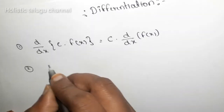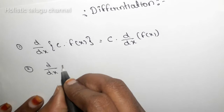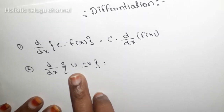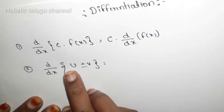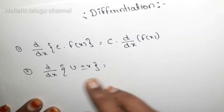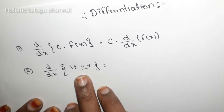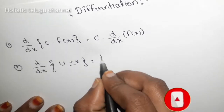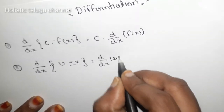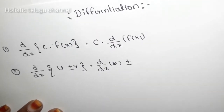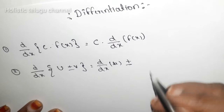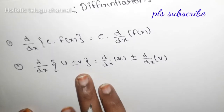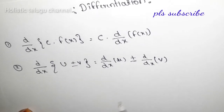The second one is d by dx of u plus or minus v. So, plus is the plus and minus is the minus, that is d by dx of u plus or minus d by dx of v. We do the differentiation of the two functions separately.